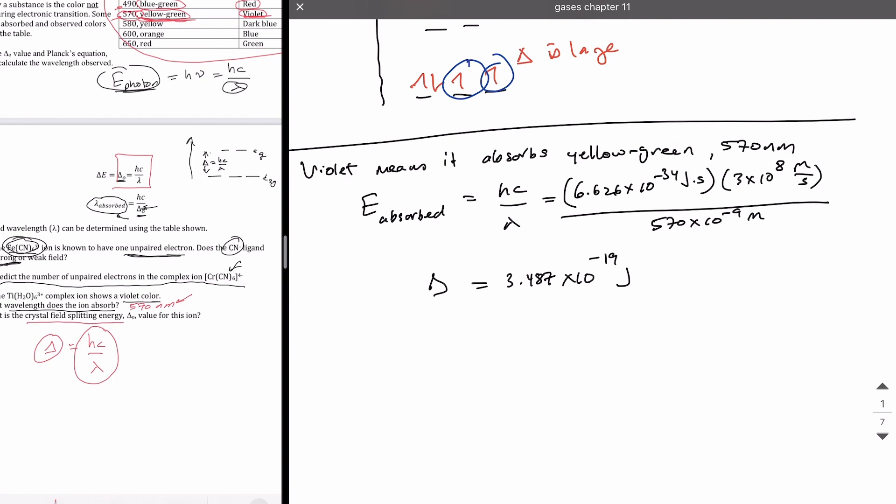I'm showing the calculation here on the right. Remember that h is just 6.626 times 10 to the minus 34 joules per second. Speed of light is 3 times 10 to the 8 meter per second. Our wavelength is 570 nanometer, which is 570 times 10 to the minus 9 meter. That allows me to cancel these units, leaving me with just joules at the end. And so the delta is 3.487 times 10 to the minus 19 joules.